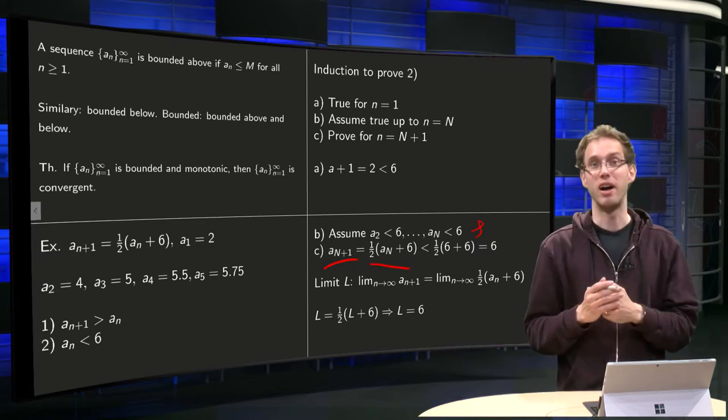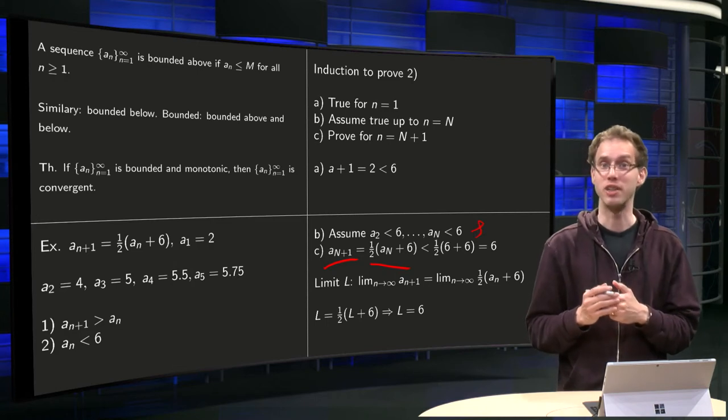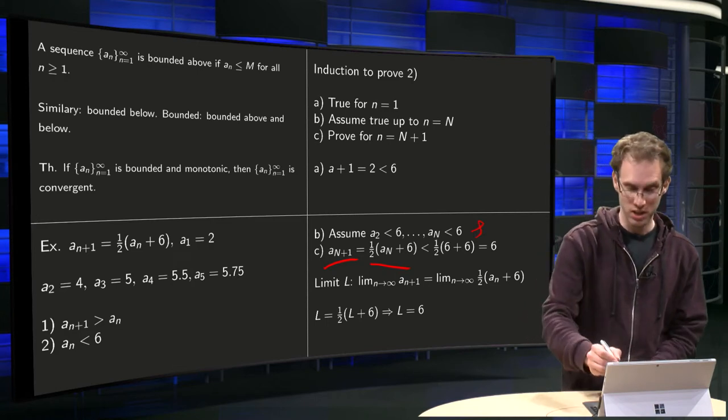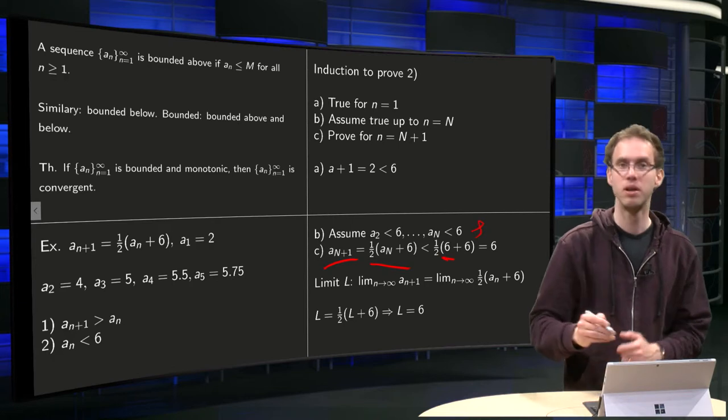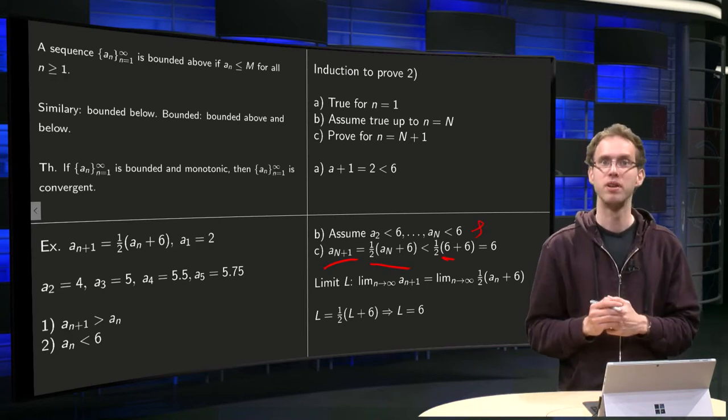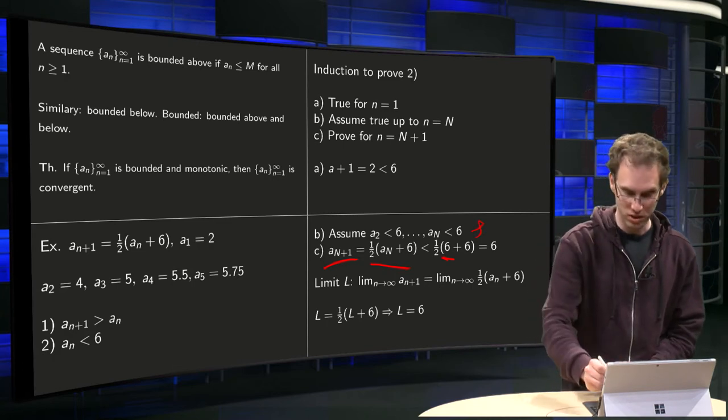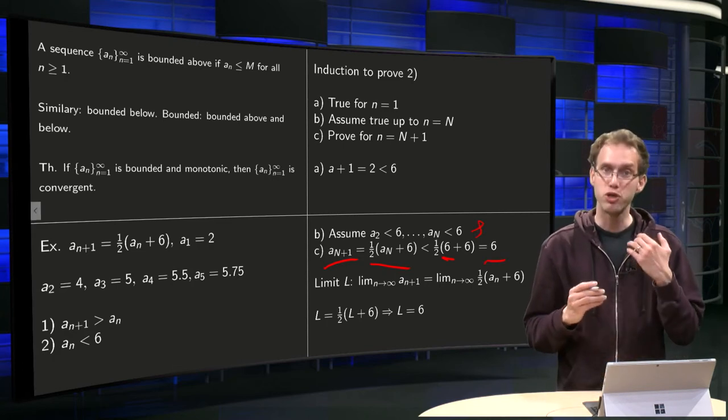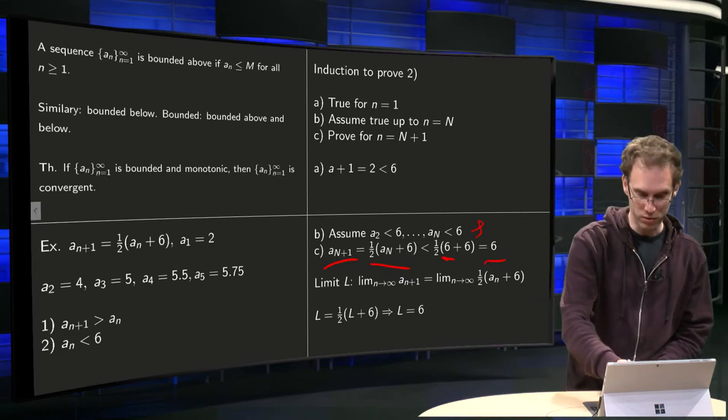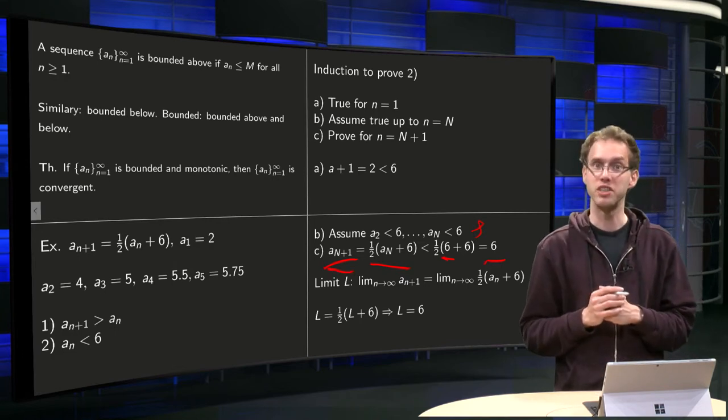And we know due to our induction assumption that an < 6. So this is smaller than 1/2(6 + 6). But 6 + 6 = 12 times 1/2 = 6. So this equals 6. So now we have shown, using the assumption that an+1 is also smaller than 6.